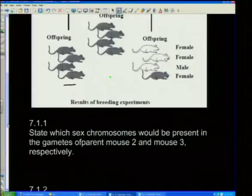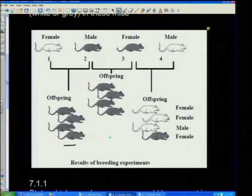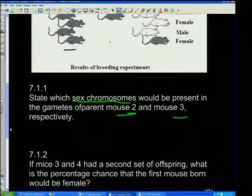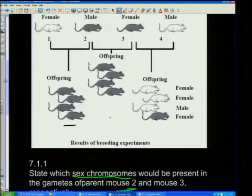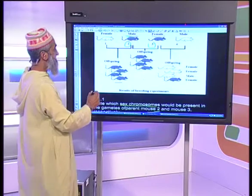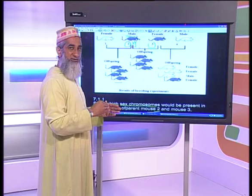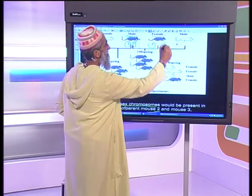The question asks: state which sex chromosomes would be present in the gametes of parent mouse two and mouse three. Mouse two is male, so he would have X and Y — the Y chromosome determines maleness. Mouse three is female, so her sex chromosomes are X and X. When talking about sex chromosomes, it is either XX or XY — nothing else.